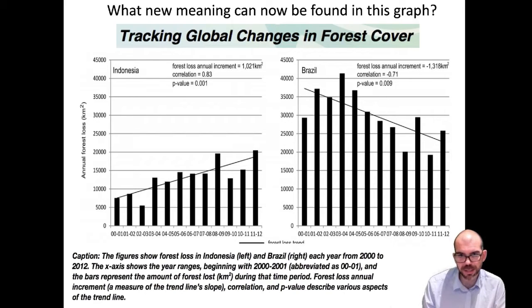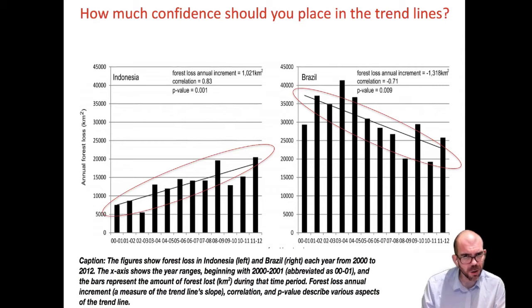Well, looking at Indonesia, it appears that there's an increase over time in the amount of forest lost, whereas in Brazil, there's a decrease. Looking at the caption, it informs me that the figures show forest loss in Indonesia and Brazil from the year 2000 and 2012. X-axis shows year ranges beginning with 2000 and 2001, and the bars represent the amount of forest lost. Okay, I was correcting my reading of the graph, but as typical, there is more to this graph. Forest loss, annual increment, correlation, and p-value describe various aspects of the trend line. So we want to know, well, how confident can I be in this trend? Does this trend line actually represent trends that are occurring in the world, or is this just a line I drew on my graph and it doesn't match reality?